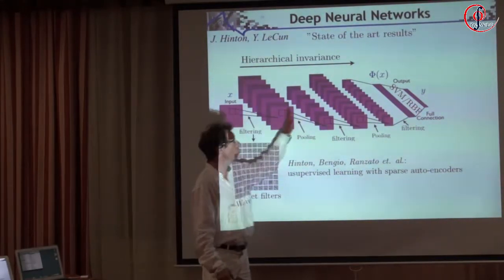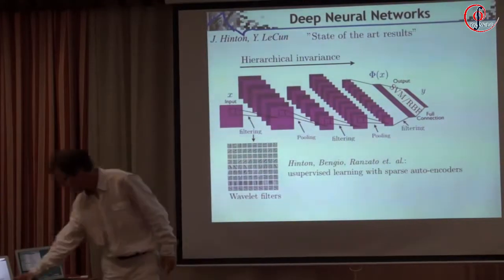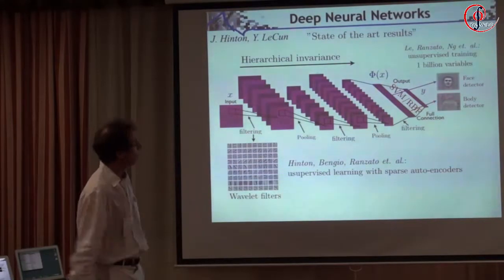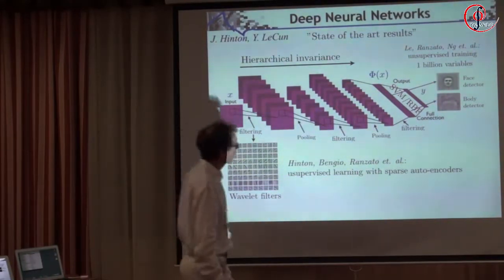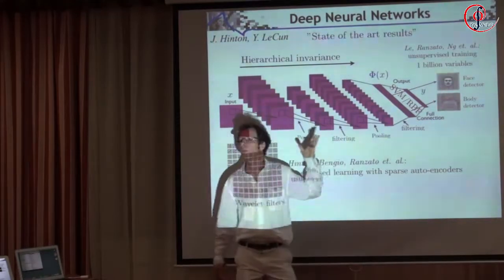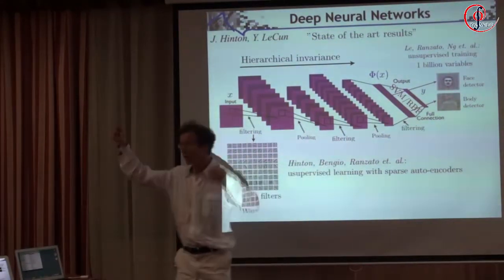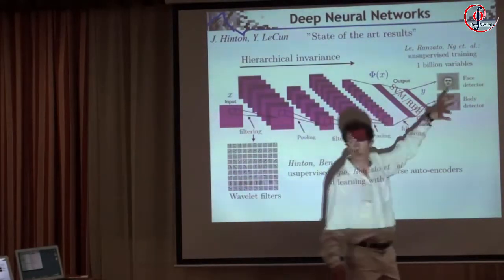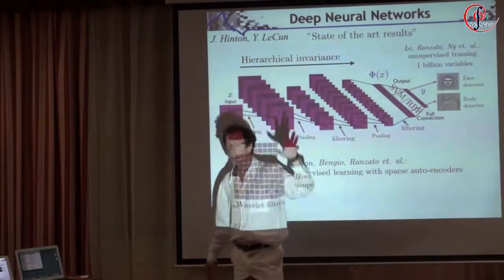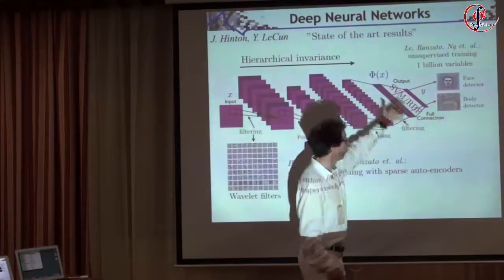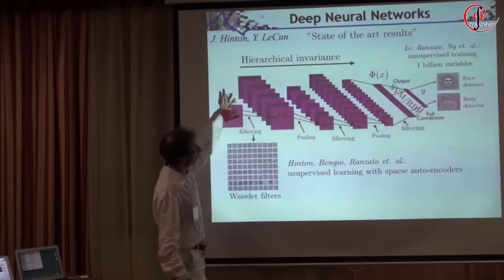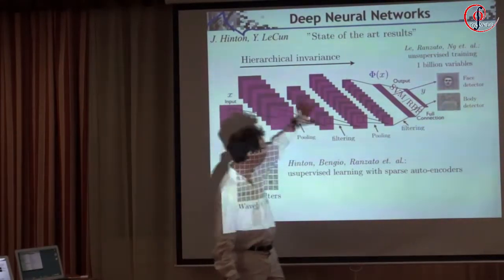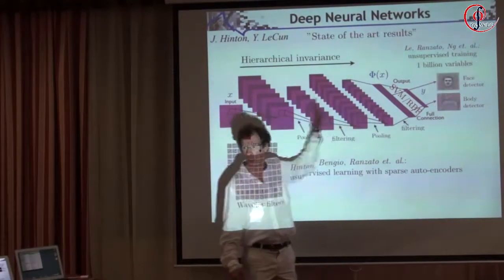There are greedy strategies to learn these networks, and they implement that on a very large scale. Google has a one-billion-variable network doing recognition. They put millions of images into these networks from YouTube and so on. At the end, they get detectors which are very invariant and very specialized — like faces and bodies — which are automatically learned. The intuition is that they built progressively more and more invariant representations.